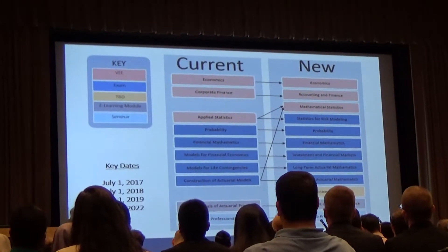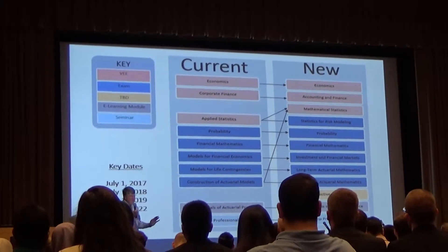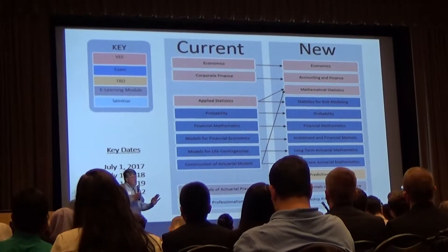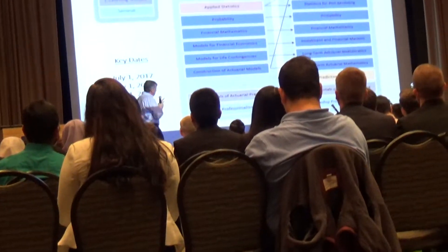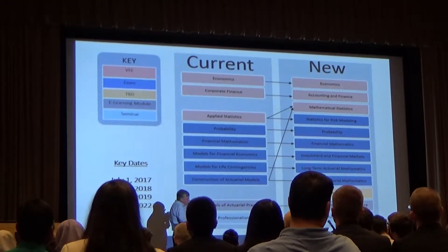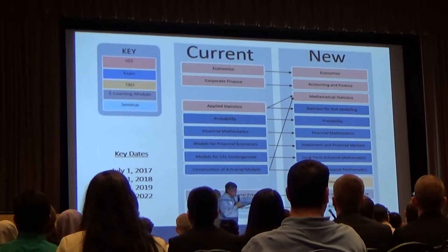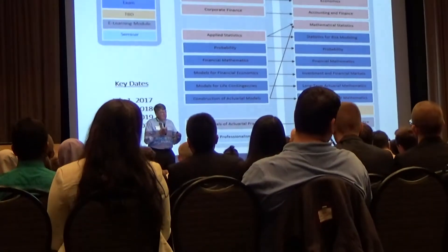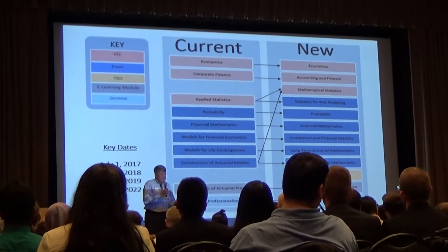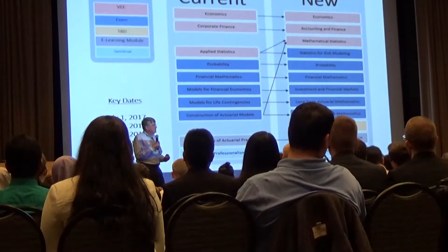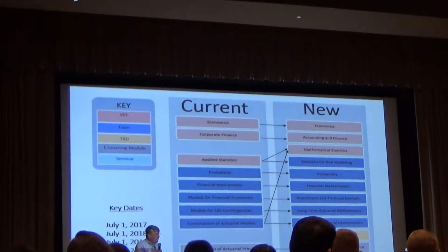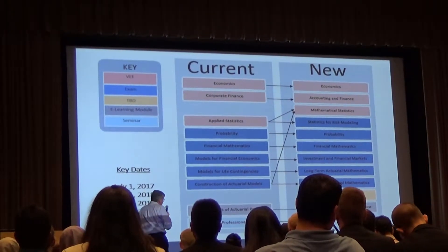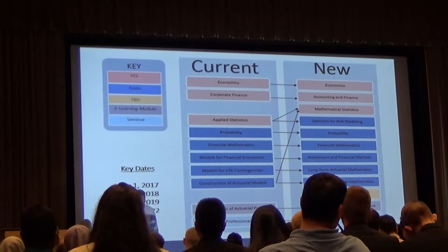On July 1, 2018, the requirements for Associateship of the Society of Actuaries are changing. If you receive your ASA designation prior to July 1, 2018, the current requirements apply. If you receive your ASA after that date, the new requirements apply. What does it mean to receive your ASA? It means your name must appear on the list of new ASAs published each month by the Society of Actuaries — your name has to appear on the list by May or June of 2018. So if you take an exam in July and don't get results until August, that doesn't work.